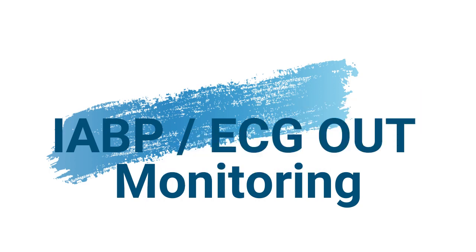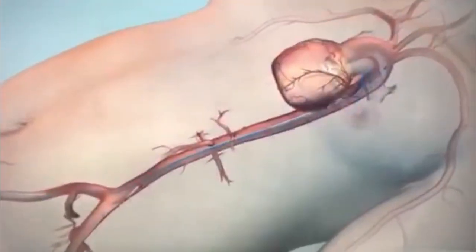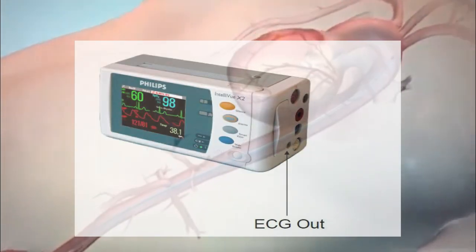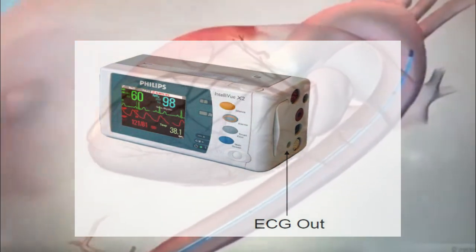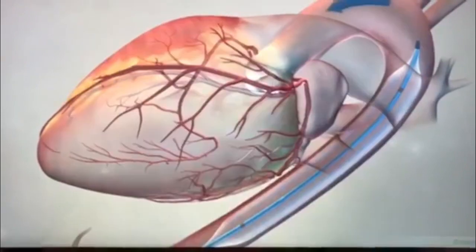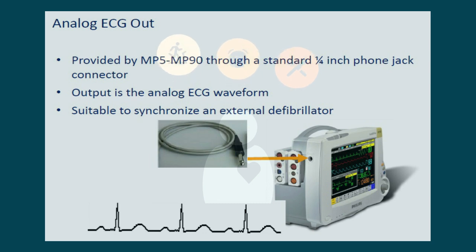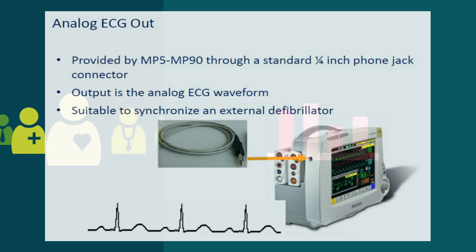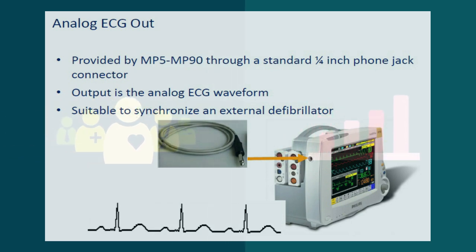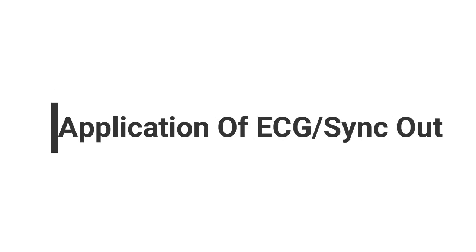The ECG out/marker interface receives the ECG waveform directly from the ECG/RESP Arrhythmia SD segment physiological algorithm via an RS-422 serial interface, and converts the digital ECG signal to an analog ECG signal. In addition, the ECG out controller receives marker information from a connected device and forwards the data to the ECG/RESP Arrhythmia SD segment physiological algorithm. The converted analog signal is used to synchronize a connected device to the patient's ECG.